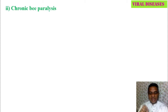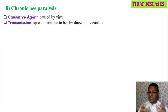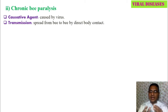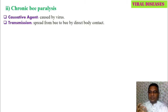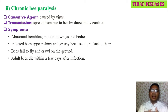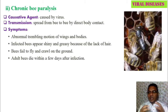After sac brood disease, the next viral disease is chronic bee paralysis, also caused by a virus. The disease spreads from bee to bee by direct body contact — through monitoring the colony, feeding developmental stages, collecting food material, and constructing the comb. There is continuous body-to-body contact in the colony, through which the disease spreads from one colony member to another.